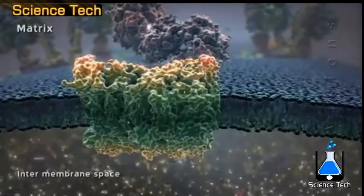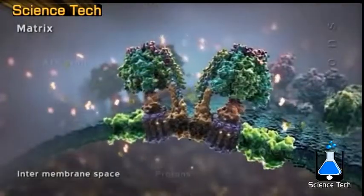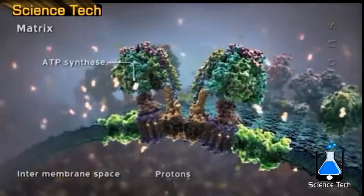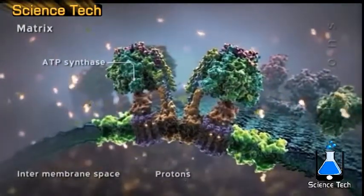Electron transport in complexes 2, 3, and 4 is coupled with the pumping of protons from the matrix to the intermembrane space.